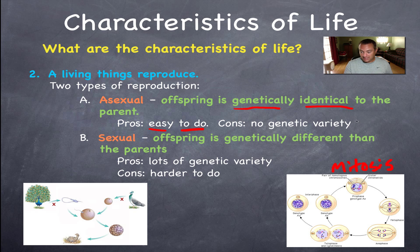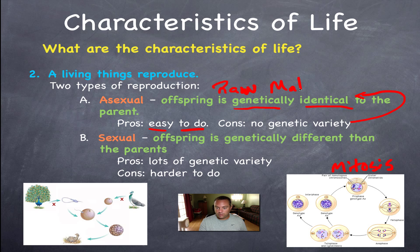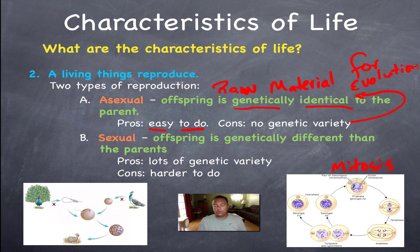Genetic variety is the raw material for evolution. We need individuals with special traits to be able to survive so that a species can carry on. We're going to cover this in much more detail in two chapters later in the school year, so just remember what we covered here.